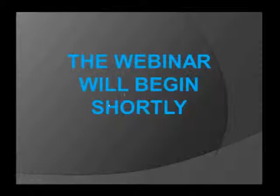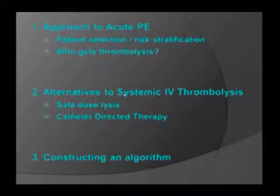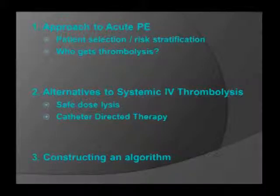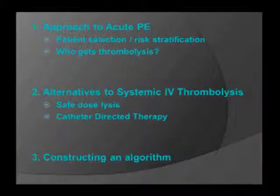The topic is catheter-directed therapy in submassive PE. I'll start with the general approach to PE — how we select and stratify patients, and in so doing, decide who gets thrombolysis. Then I'll talk about alternatives to systemic IV thrombolysis, which will involve safety of lysis, and that's where we introduce catheter-directed therapy. Finally, I'll discuss how we construct an algorithm and approach the patient.